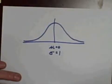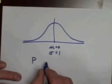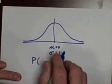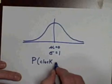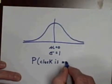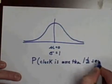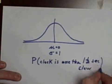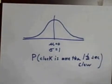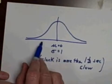Here's my question: what's the probability that I randomly pick one of the clocks off the assembly line and the clock movement is more than one and a half seconds slow? What's the probability that the clock is more than one and a half seconds slow?